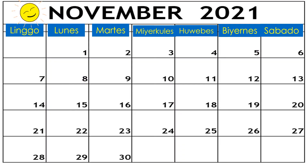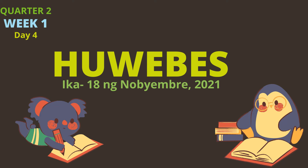Ito ang kalendaryo ng buwan ng Nobyembre ngayong taong 2021. Ito ang bilang 18. Katapat nito ang Huwebes. Ngayon ay araw na ng Huwebes, ika-18 ng Nobyembre, 2021.